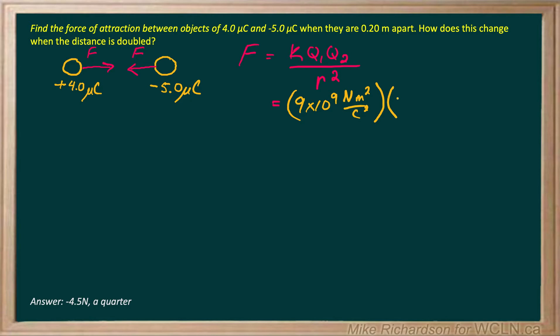Q1, 4 times 10 to the negative 6 coulombs. And Q2 is 5 times 10 to the negative 6 coulombs.